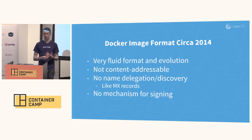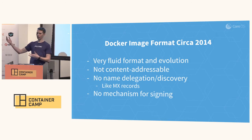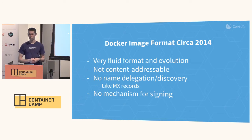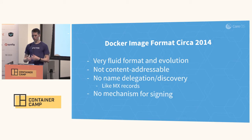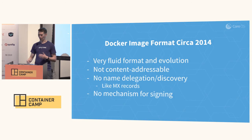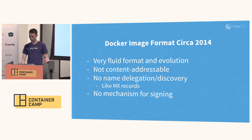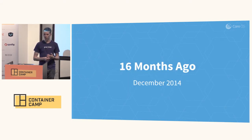There's no name and delegation, so I can't do things like say I own example.com and I own example.com to host all of its objects for these containers at this S3 bucket or on Google's container registry or whatever. You didn't really have this concept like MX records. And there's no mechanism for signing. So Alice is kind of unable to do her work, and nobody can actually trust the images that are landing on the machine. That's circa 2014.